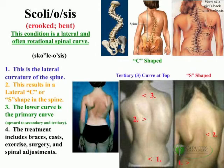Sometimes, if you simply correct the length of the legs with a lift — as with a person with polio — the abnormal curvature will correct itself. Sometimes surgery is required, sometimes lifts are required, and sometimes spinal adjustments and an increase of muscle tone will correct this abnormal lateral curvature of the spine.